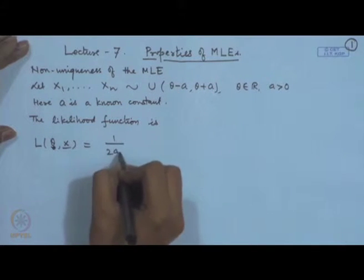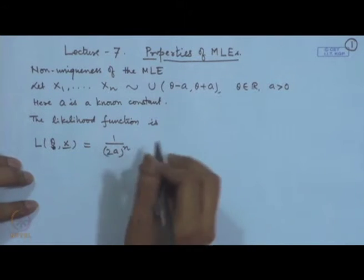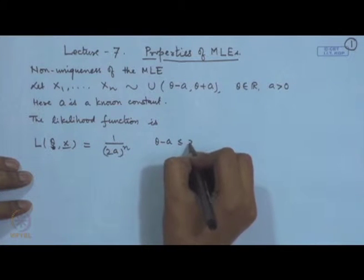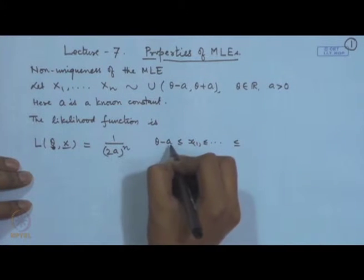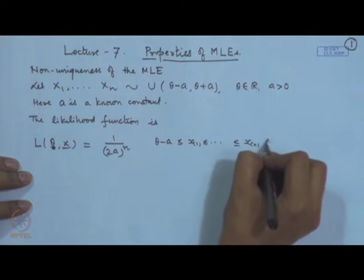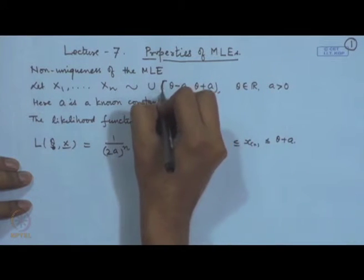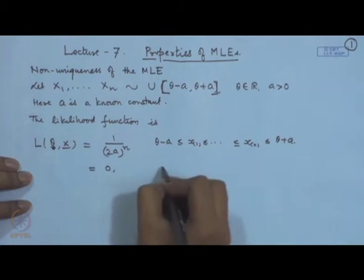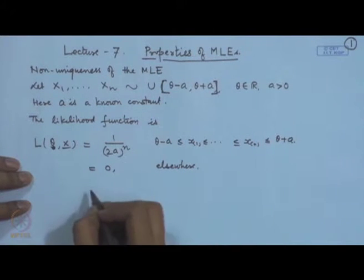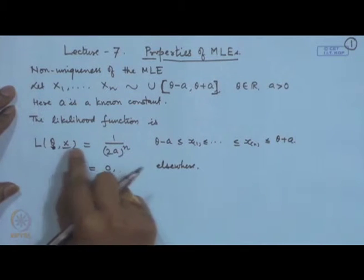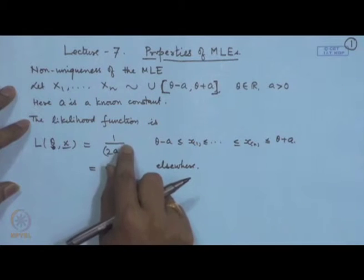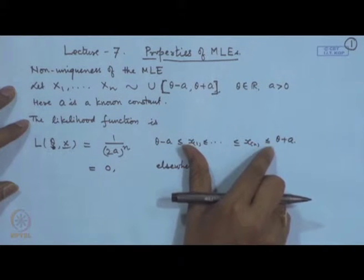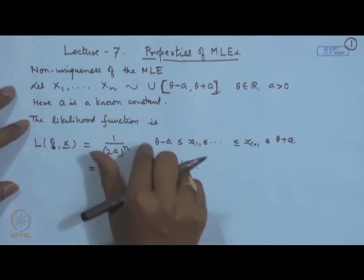The likelihood function is 1/(2a) for the density. So the joint distribution of x1, x2, ..., xn becomes (1/2a)^n, and each of the xi's lies in the interval theta minus a to theta plus a. We can summarize this as: theta minus a ≤ x1 ≤ ... ≤ xn ≤ theta plus a, and equals 0 elsewhere. The maximum value of the likelihood function is (1/2a)^n, since this is a constant. At other points it is 0. This maximum is satisfied when the inequality holds.